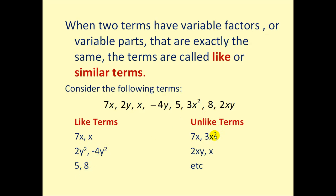Unlike terms would be something like seven x and three x squared because the variable parts are not exactly the same. Though these both have factors of x, this has one factor of x and this has two factors of x, therefore they're not like terms.